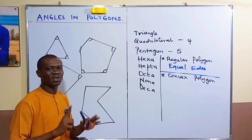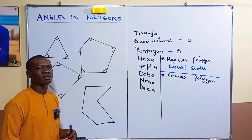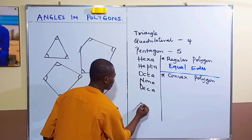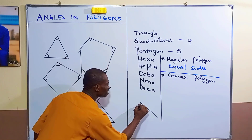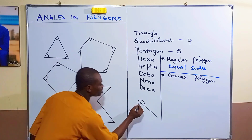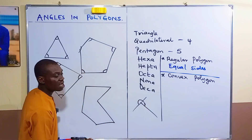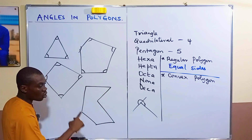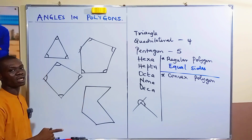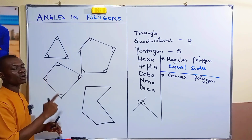An angle is reflex when it is more than 180 degrees but less than 360 degrees. For example, if I have something of this nature, this angle here is a reflex angle because it has passed the 180-degree mark but has not completed the full cycle, so it is less than 360 degrees. Such an angle is called reflex.